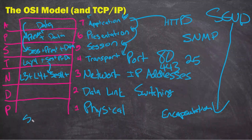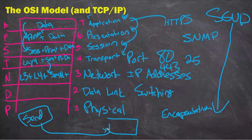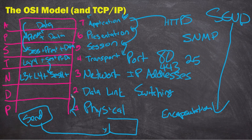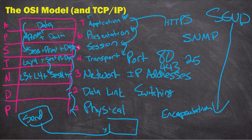Once we hit Send, it goes out the computer and is received by another computer or server. That computer will look at what it received from the physical layer and go up the stack — de-encapsulating as it goes. At layer two, it checks the MAC addresses: is this destined for my MAC address? If yes, go up. Is it destined for my IP address? If yes, go up. Am I listening on this port? If yes, go up and hand it off to the application.